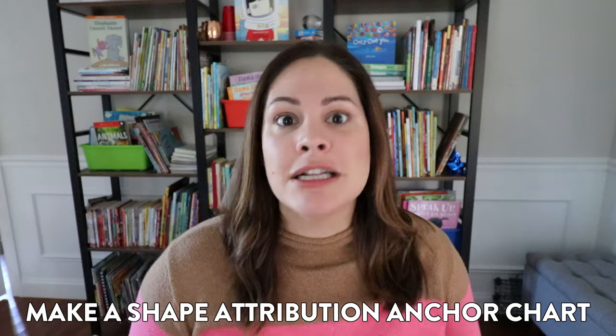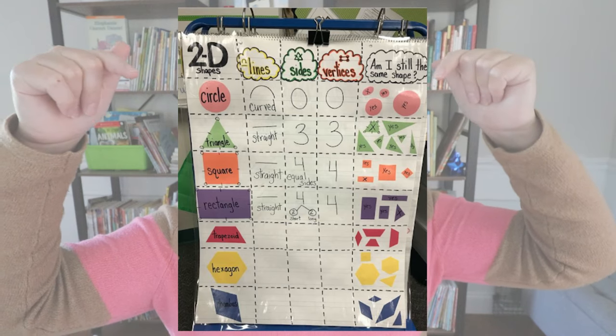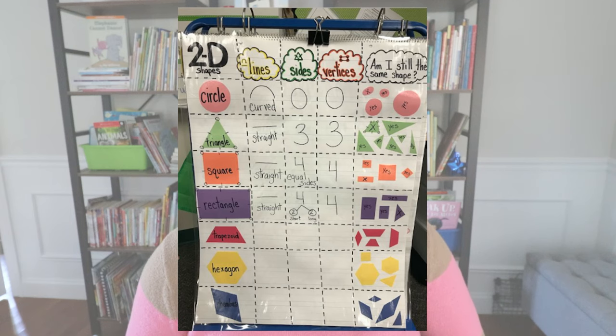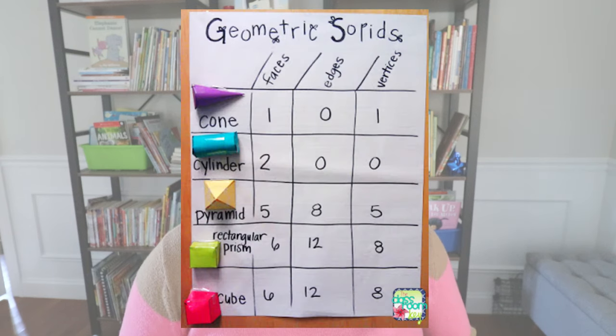After students have explored shapes, tip number two is to make a shape attributes anchor chart. There are tons of examples on Pinterest and educational blogs. For a 2D anchor chart you'll typically see the name of the shape, an image, and how many sides and corners it has. For a 3D shape anchor chart, it'll include the name and image plus how many faces, edges, and vertices each shape has. I'd also add one more column to either chart — a real-life example of each shape.